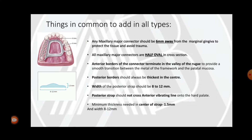Things common to all types of maxillary major connector: any maxillary major connector should be 6 millimeters away from the marginal gingiva to protect the tissue and avoid trauma. All maxillary major connectors are half-oval in cross-section.